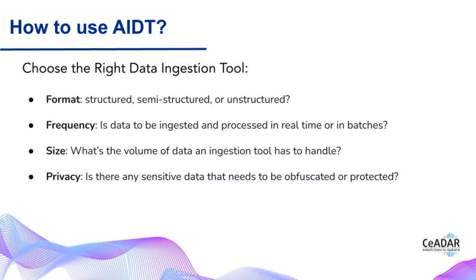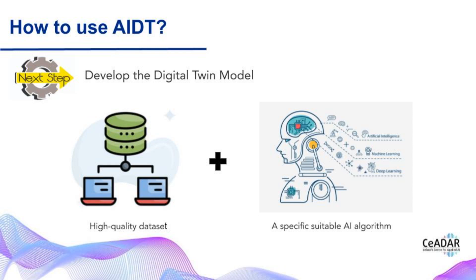How do we choose the right data ingestion tool? There are a few key factors to consider. Firstly, what format is our data — is it structured, semi-structured, or unstructured? Secondly, do we need to ingest and process data in real-time or in batches? Thirdly, what is the volume of data the ingestion tool has to handle? And finally, is there any sensitive data that needs to be protected or obfuscated? Data ingestion is a crucial step in the AIDT process, and having the right data ingestion layer and tools is essential for ensuring efficient and effective data processing.